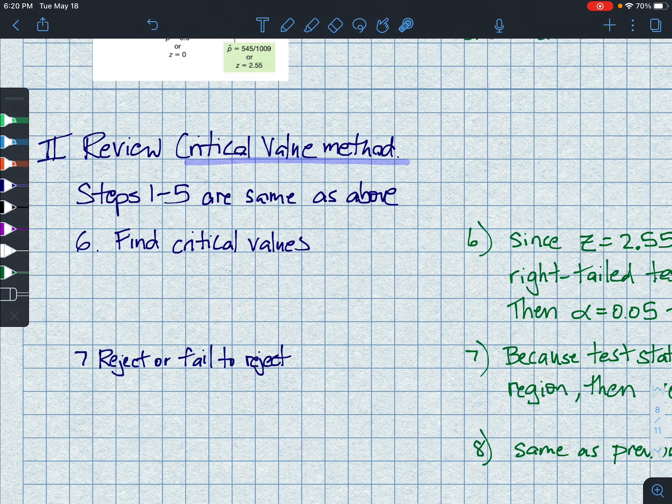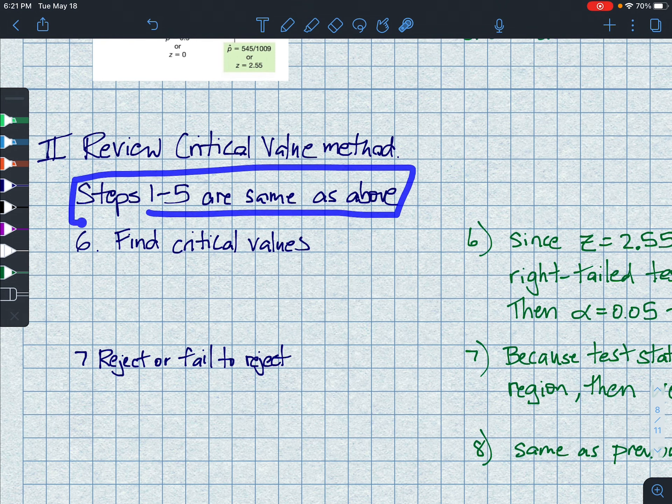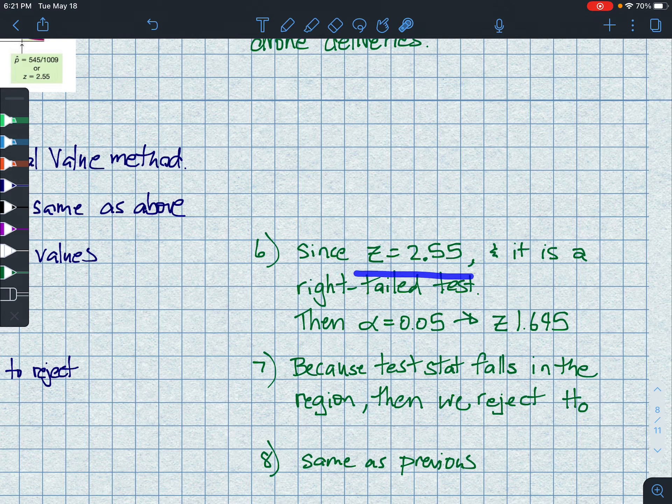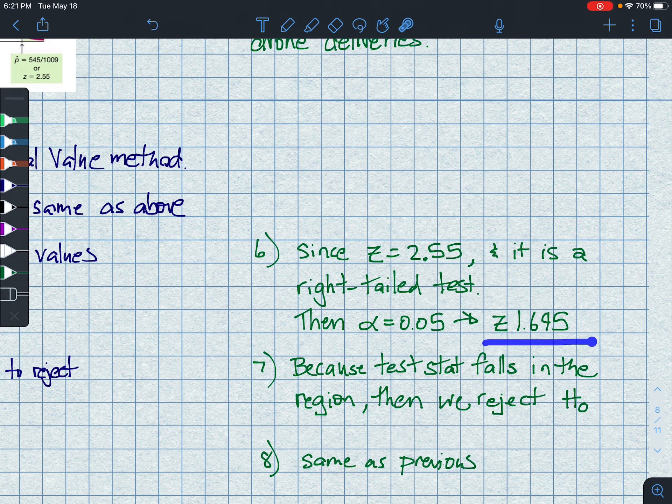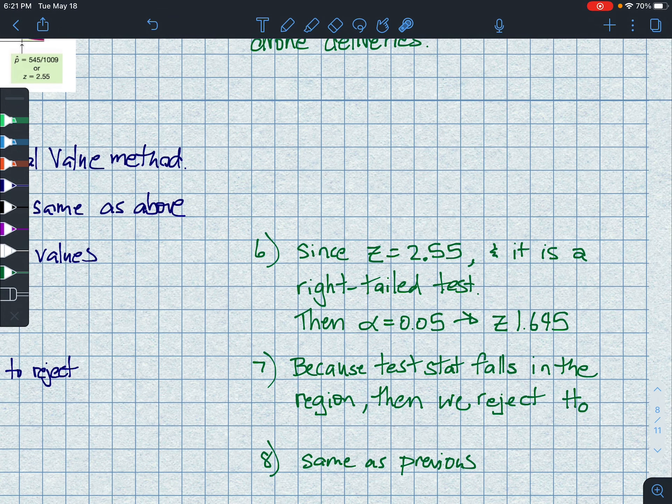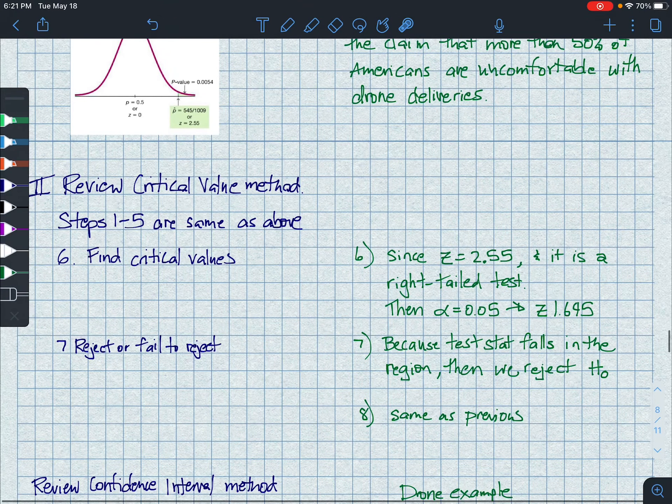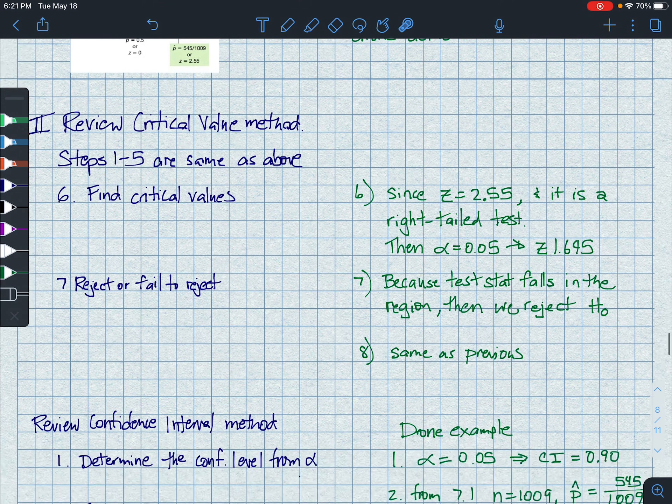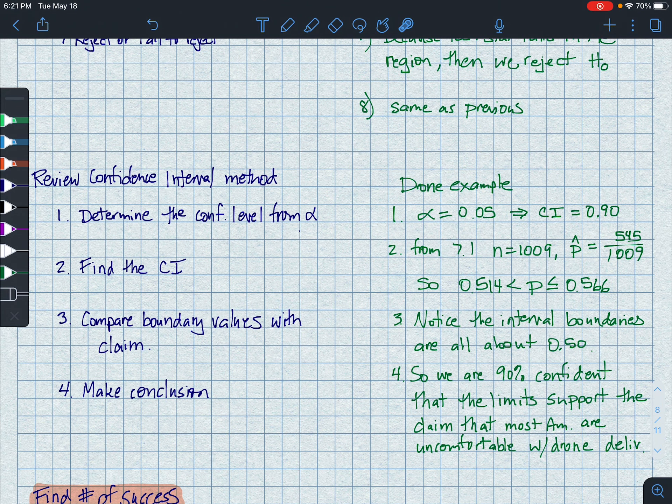If I was doing this versus a review, sorry, critical value method, steps 1 to 5 are identical as above. We just have to find the critical values. And since Z is 2.55 and it's a right tail test, then alpha turns into Z 1.645. And because the test now, because 2.55 is to the right of 1.645, then we fall into the region and we reject. So our conclusion is the same. Critical value or the p value. It doesn't matter.